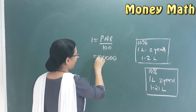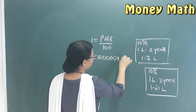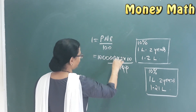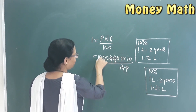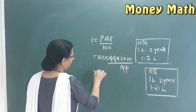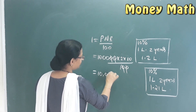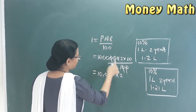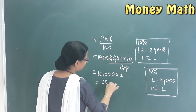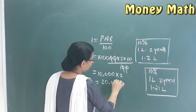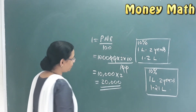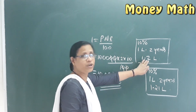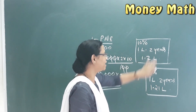The principal amount is 1 lakh, into two years, into ten percentage rate of interest divided by 100. That gives us 10,000 into two, which is 20,000. So 1 lakh plus 20,000 rupees — that is the simple interest result.